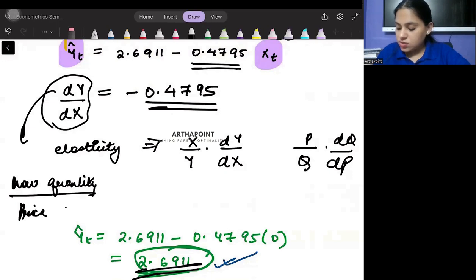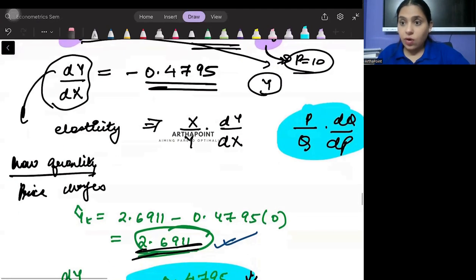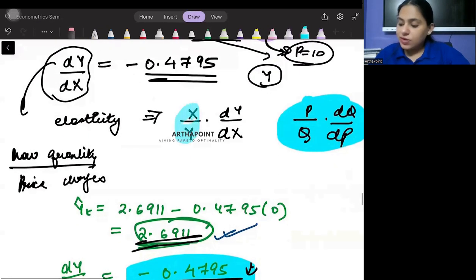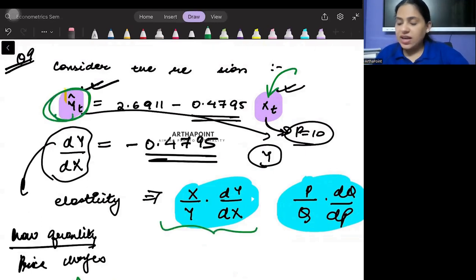This is only telling me how my quantity will change when my price changes. But what about the initial price and quantity? You should be telling me that the price is 10, for example. If you give me the information about price, I will be able to find out the quantity. I will be able to plug those values here and find the elasticity. But if you don't tell me the price or quantity, I won't be able to fill this in and won't be able to find the elasticity.